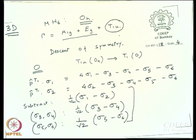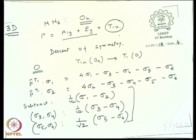Let me check. The first condition is that they should be orthogonal to each other — and of course they are. The second condition is that they should conform to T1 symmetry in the O point group, which corresponds to T1u symmetry in the Oh point group.